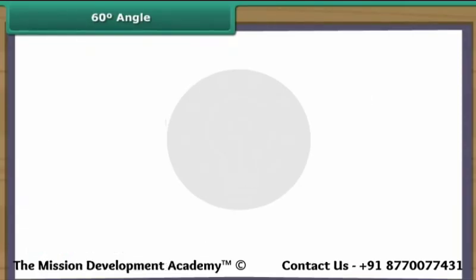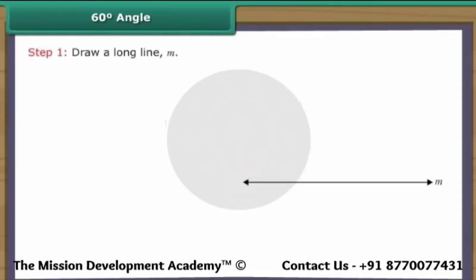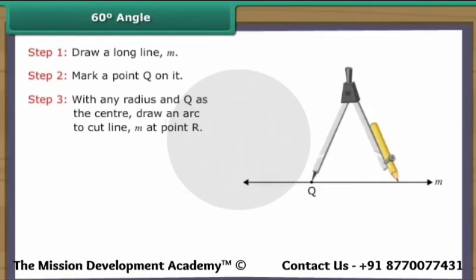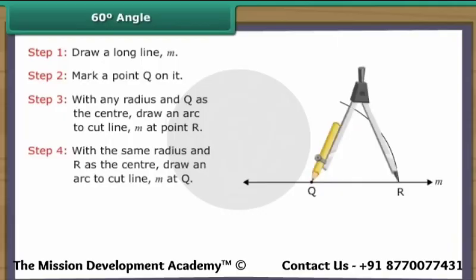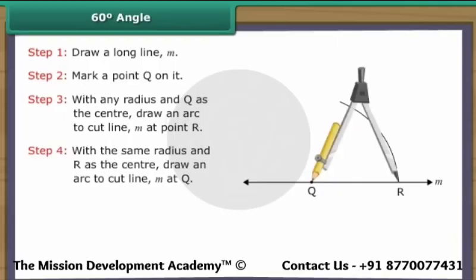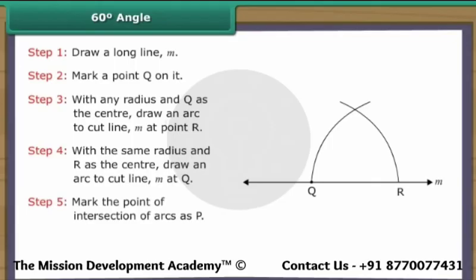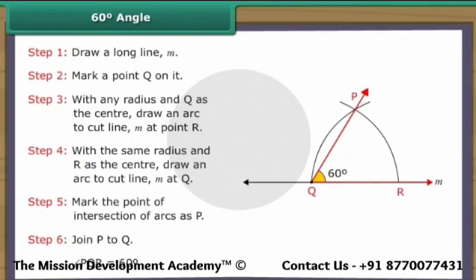Construction of 60 degree angle. Draw a long line M and mark a point Q on it. With any radius and Q as the center, draw an arc to cut line M at point R. With the same radius and R as the center, draw an arc to cut the previous arc. Mark the point of intersection as P. Join P to Q. Angle PQR is formed, which measures 60 degrees.